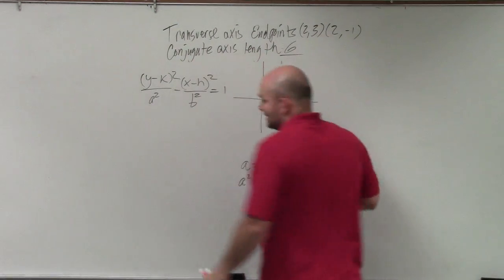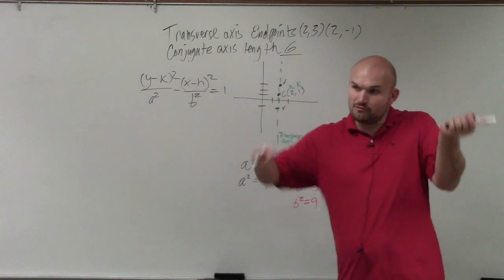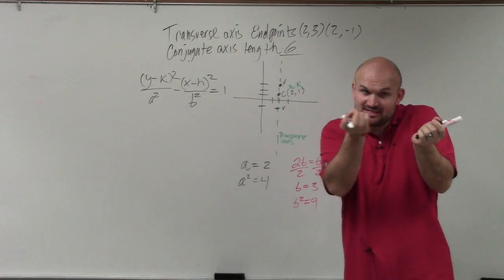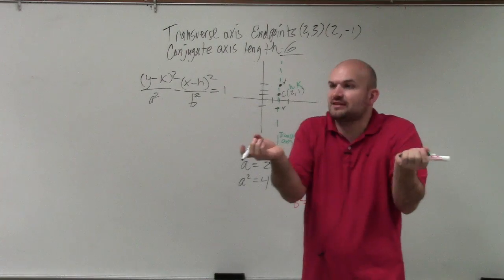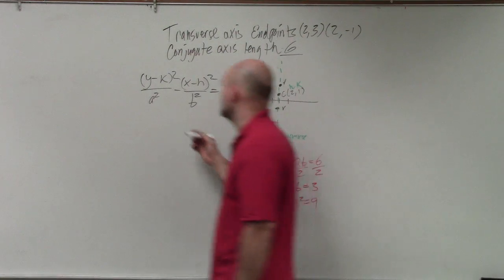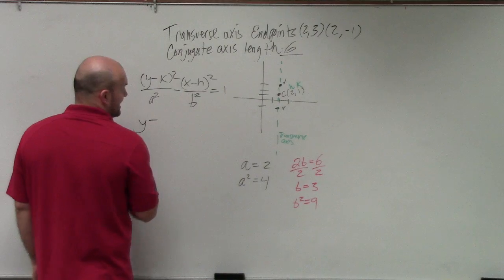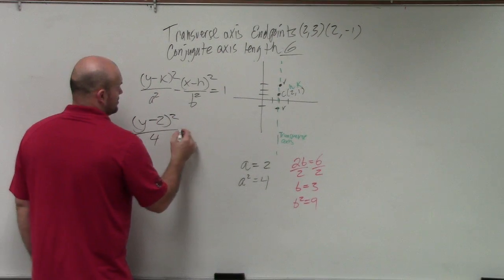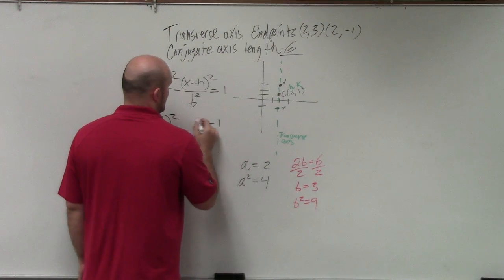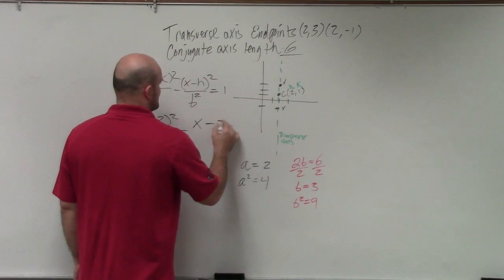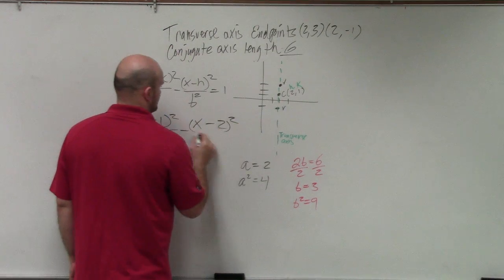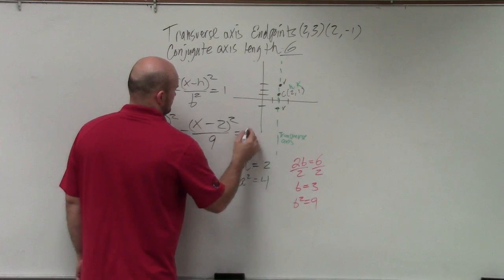The length of your conjugate axis is 6. From one co-vertice to the other co-vertice is 6. The center is in between. So the distance from the center to one co-vertice is half the length. Make sense? So y minus 1 squared over 4 minus x minus 2 squared over 9 equals 1. Done.